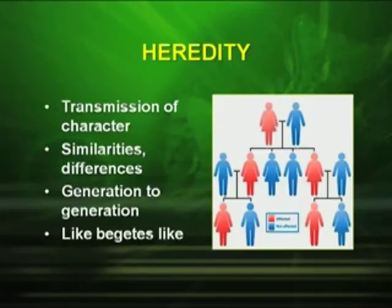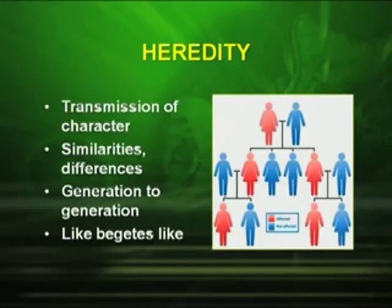Before we go into the details of Mendel's experiment, let us have an insight into some important terms used in genetics. The first important term is heredity. What is heredity? It is the transmission of characters — similarities and differences — from generation to generation. A very common proverb is 'like begets like,' meaning similar organisms give rise to similar types.